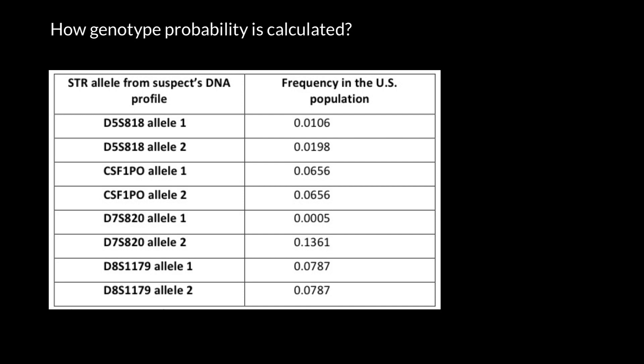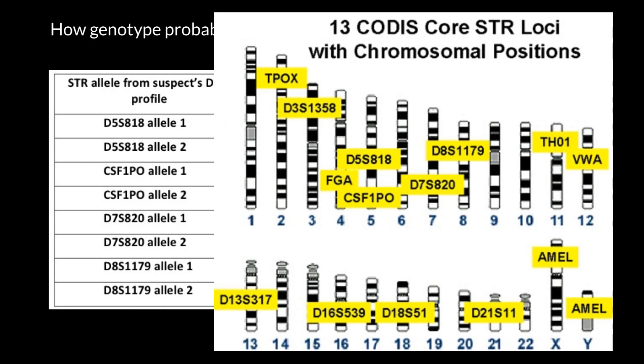A judge can, based on this information, come to a conclusion whether a certain person is innocent or, with a high degree of certainty, committed a crime. So, once again, a brief reminder: the CODIS system is based on certain loci of the STR — short tandem repeats.